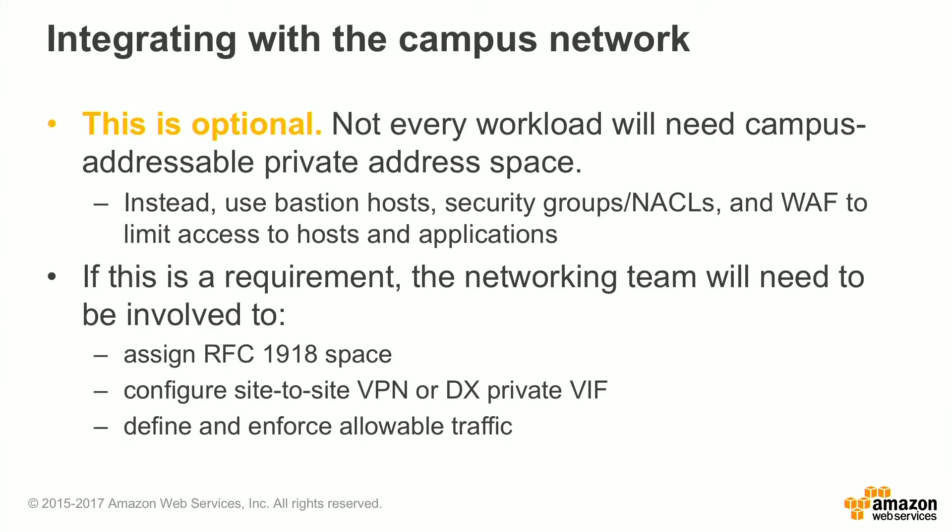Integrating with your campus network is an optional step — not every workload will need access back to campus. Instead, you can use bastion hosts or a combination of security groups and web application firewalls to limit access to hosts and applications. If it is a requirement to have your AWS VPC connect back to campus, then the networking team will need to be involved to assign RFC 1918 space, configure either a VPN tunnel or a Direct Connect private virtual interface, and define and enforce allowable traffic.